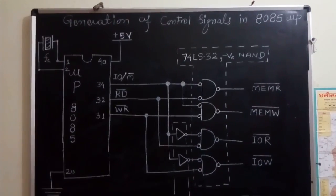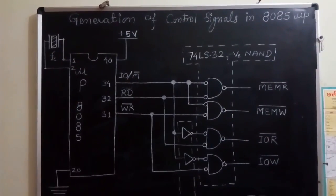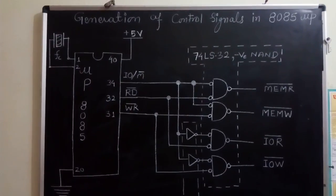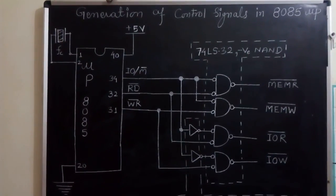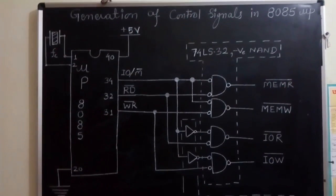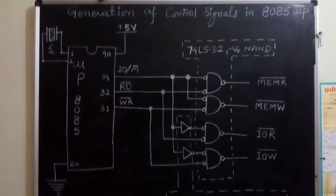that means from pin number 34, 32 and 31, which are associated with IOM bar, read bar and write bar, we have to generate four signals,